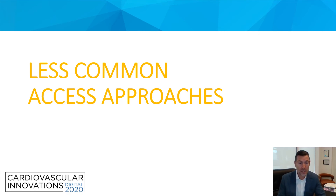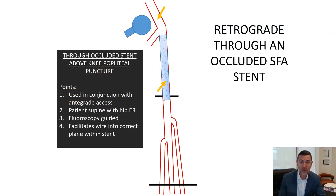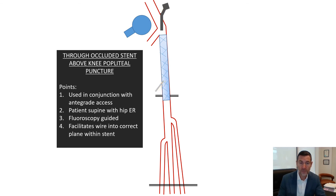Now for a few less common approaches. The first is puncturing through an occluded SFA stent, which is not an uncommon scenario. It's quite simple to puncture these stents using a 19-gauge entry needle under fluoroscopic guidance. The tube is then rotated 90 degrees to confirm luminal position, and a stiff guide wire from below is used to re-enter at the proximal portion of the occluded stent. Once the wire is externalised, the catheter is brought down from above and a stiffer wire is set up for initial pre-dilation.